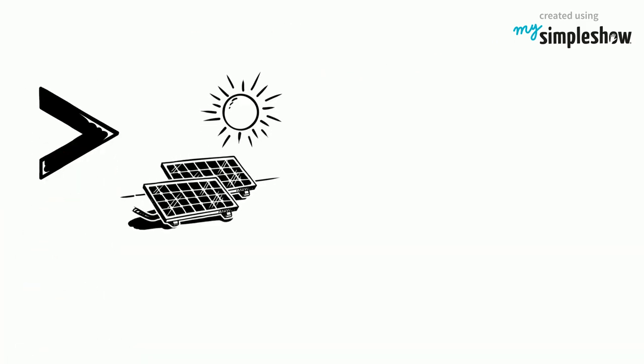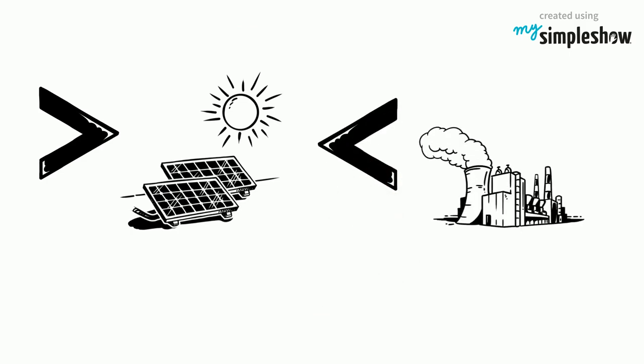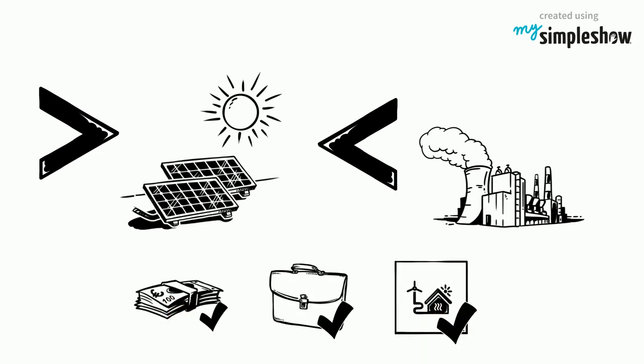The more solar electric power systems in a general area, the less capacity a utility needs to build. This ultimately saves money, creates jobs, and gives the area a clean, green source of energy.